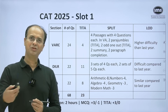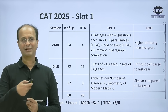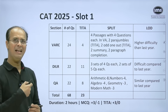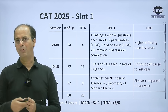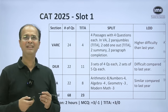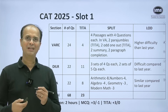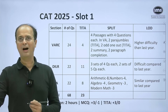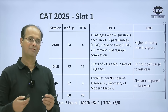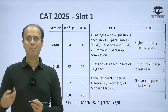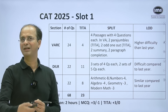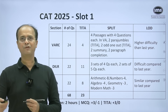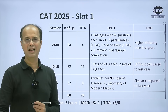Because of these two changes, we expect the VARC cutoffs to be slightly lower as compared to last year. For DILR, in slot 1 we had 11 TITA questions. Typically when you have more TITA questions, it looks as if the cutoff will go high, because you can mark more questions, sometimes even randomly. But this time the sets were actually more difficult as compared to last year, and hence for DILR we think the cutoffs will be a little lower as compared to last year.